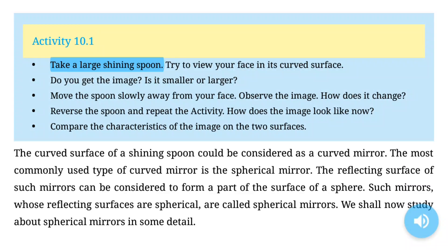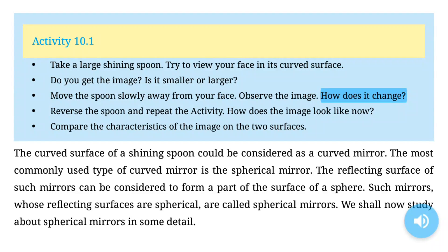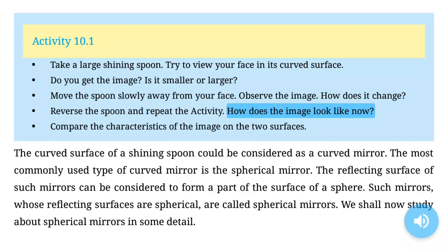Activity 10.1: Take a large shining spoon. Try to view your face in its curved surface. Do you get the image? Is it smaller or larger? Move the spoon slowly away from your face. Observe the image. How does it change? Reverse the spoon and repeat the activity. How does the image look like now? Compare the characteristics of the image on the two surfaces.